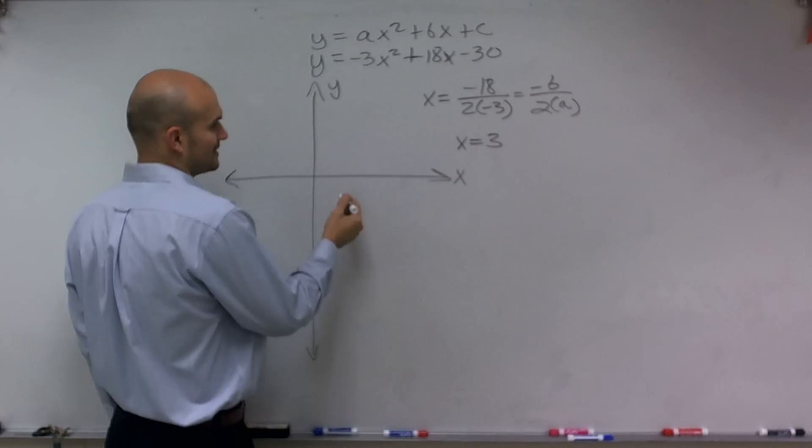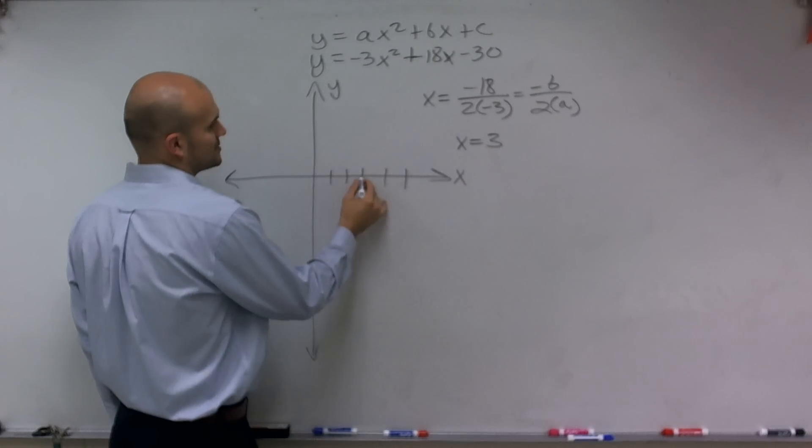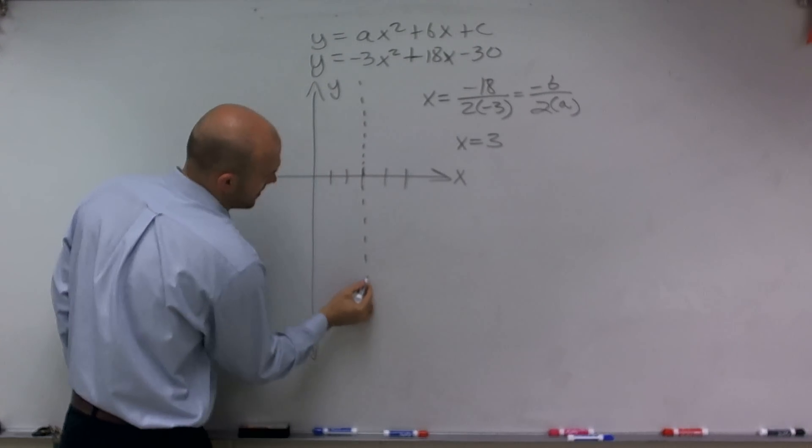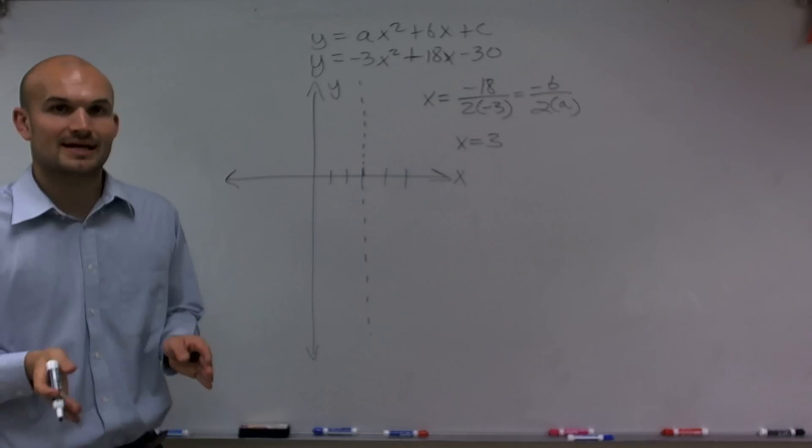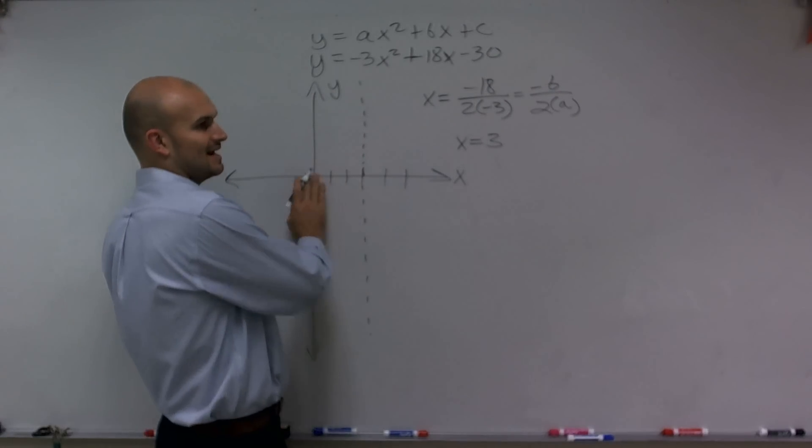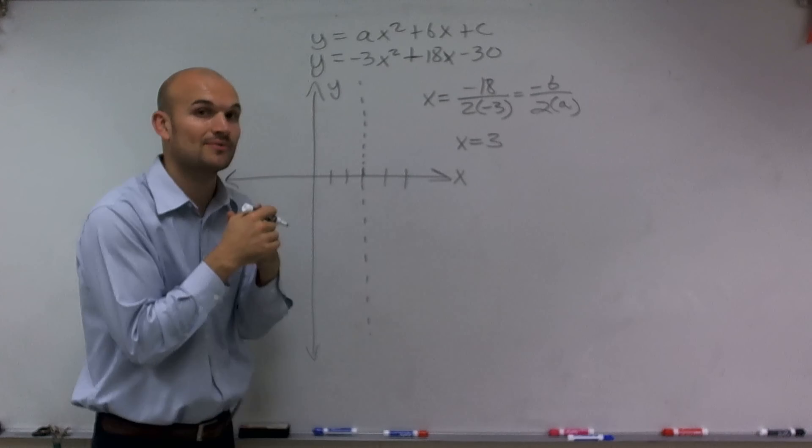So when we look at that, I'm going to go 1, 2, 3, 4, 5. So at 3, I have a line of symmetry. That means my parabola is going to be symmetric about this line. Meaning whatever is on the left side of this line, I can flip over, and that's going to be on the right side.